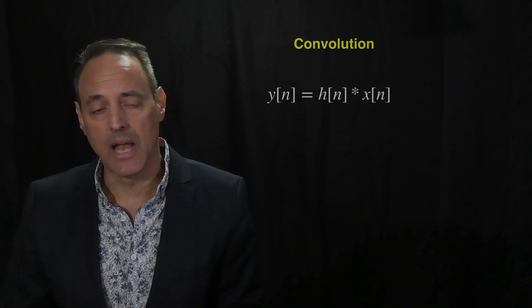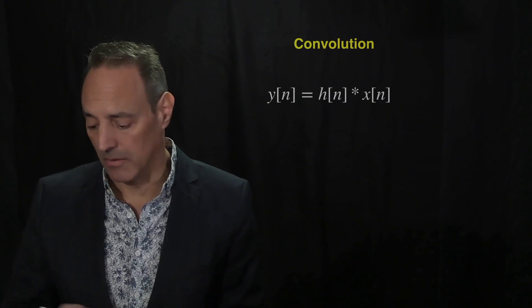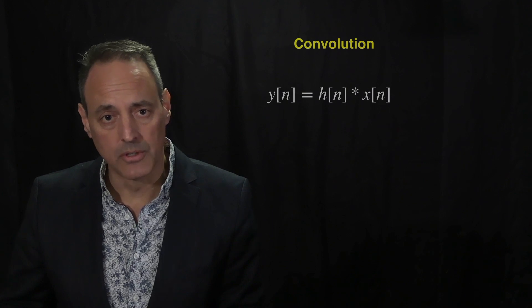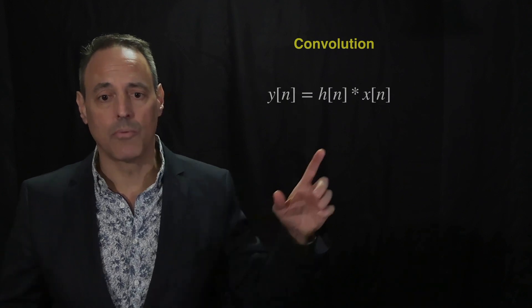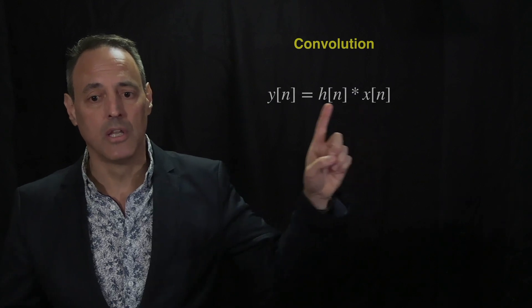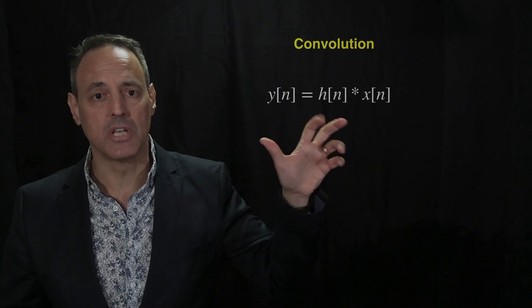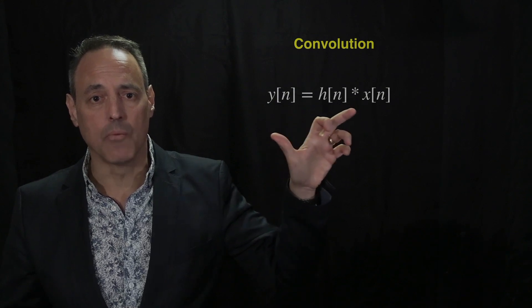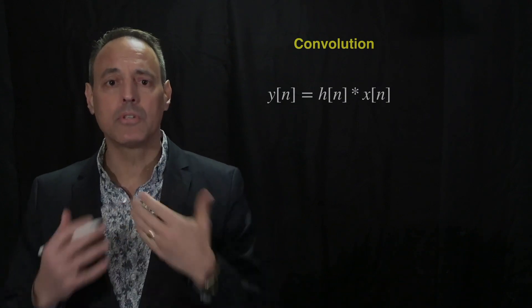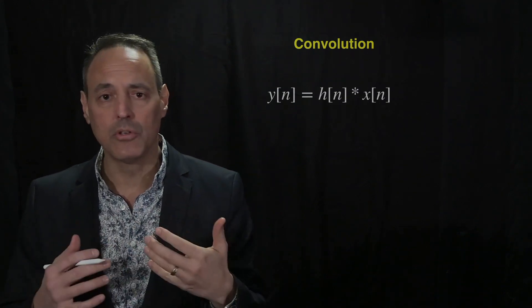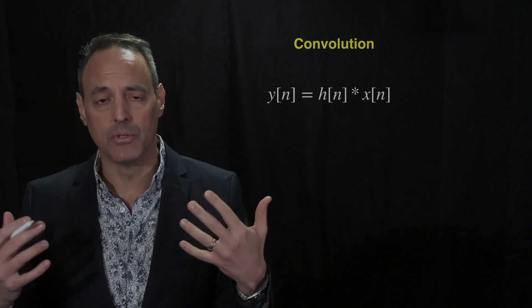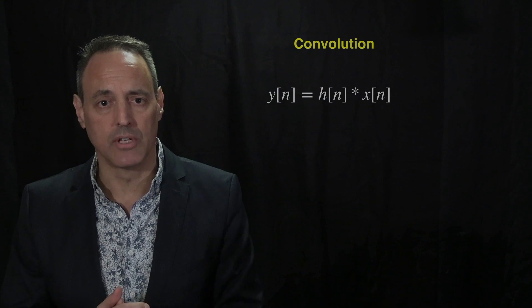Let's start with the idea of convolution. Here's the representation: for an LTI system, I have some impulse response h and an input function x that produces an output y. What we showed before is that for the continuous-time case, if you put this in the Fourier domain, all you have to do is multiply the Fourier transform of the impulse response against the input signal.